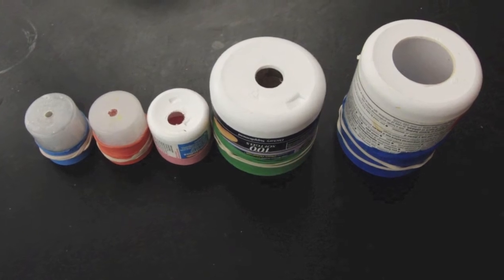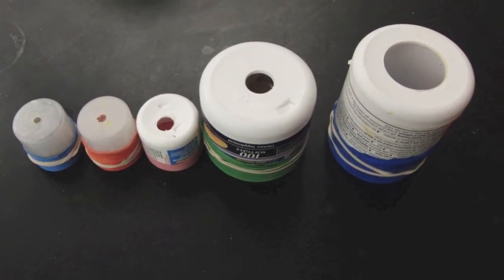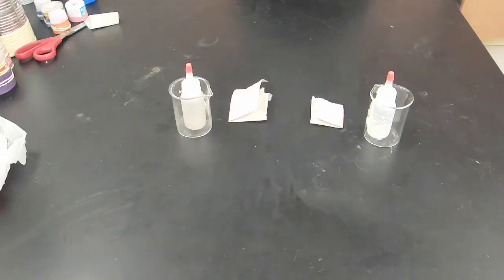So here are a few of the containers that we're going to use to make the smoke rings. But first let's take a look at how we're going to produce the smoke so that we can see them.